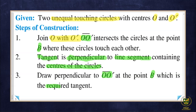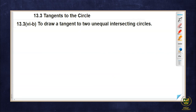In this way we understood both cases — how circles touch internally and externally, and how to draw the tangent in each situation. I hope both cases are clear to you. Now 13.3 Part 6b — we are going to construct today: to draw a tangent to two unequal intersecting circles. Intersecting circles means one circle will overlap another, and when they intersect we will get two points which we use to draw two tangents.